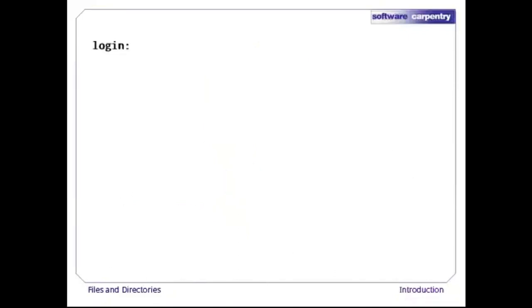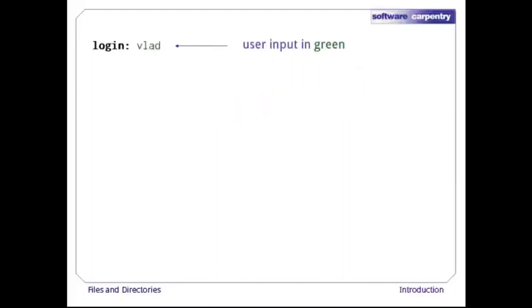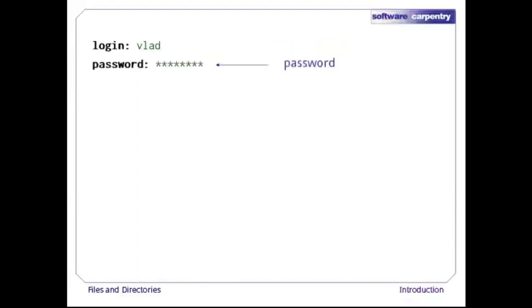Let's start by logging into the computer. Here, we're showing the shell's prompt in bold, and explanatory text in blue. Type our user ID — we'll show user input in green — and then our password. Most systems will print stars to obscure it, or nothing at all, in case some evildoer is shoulder surfing behind us.